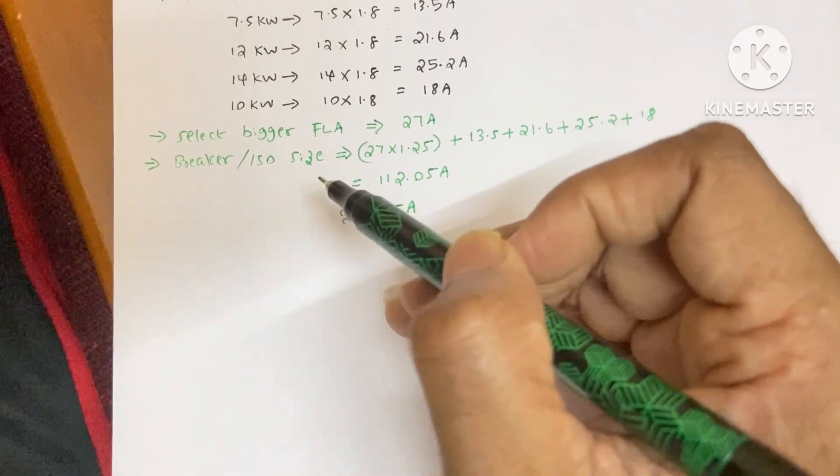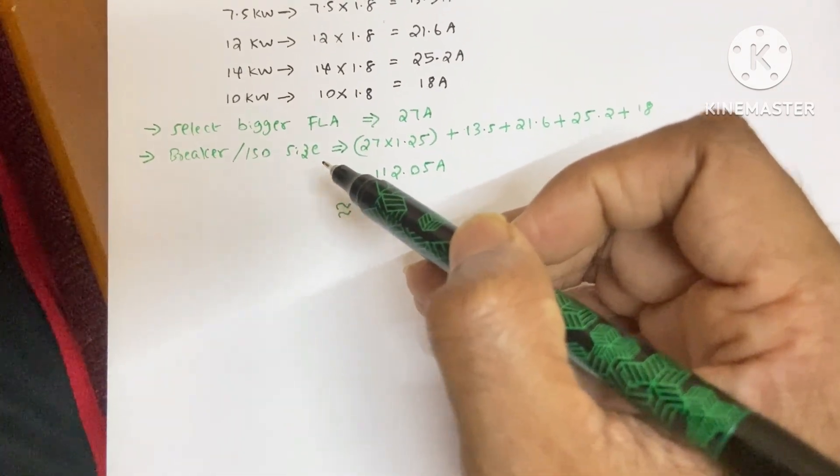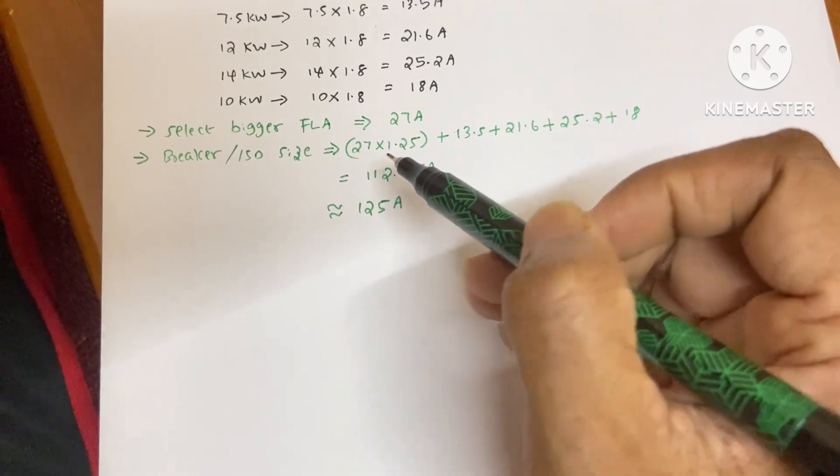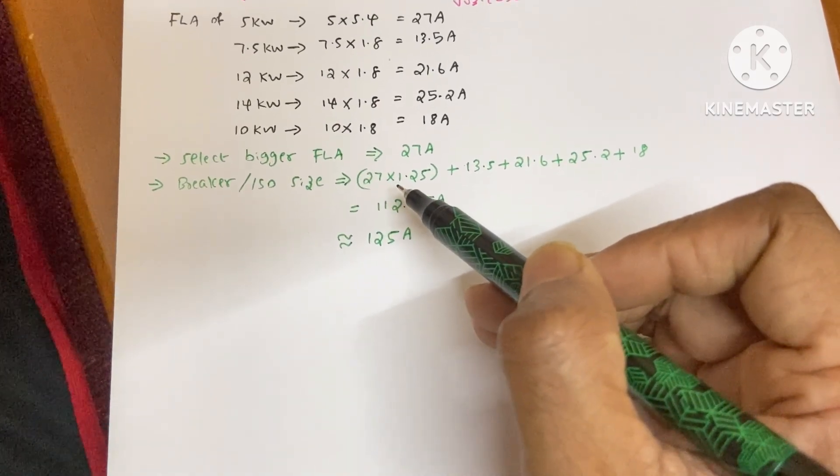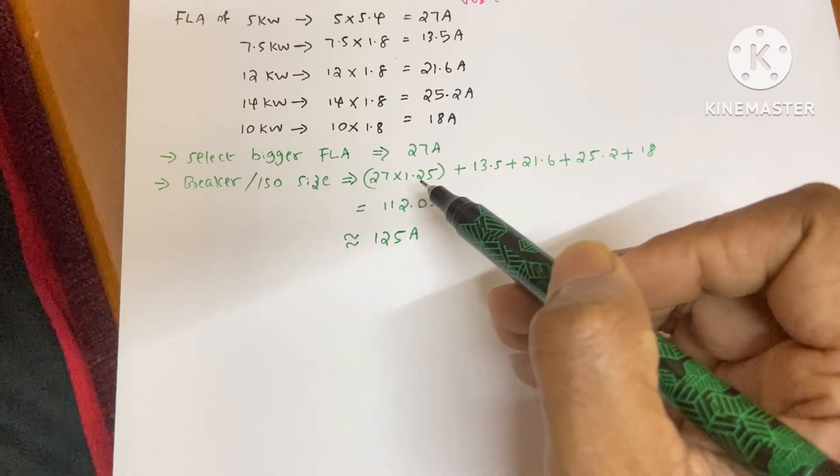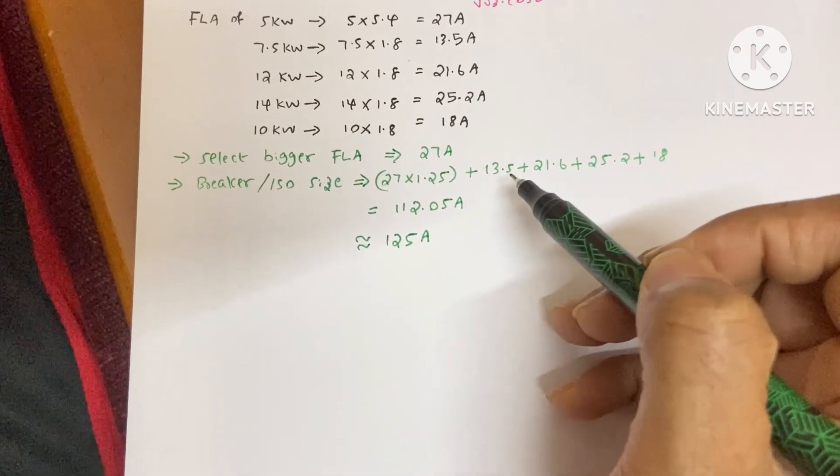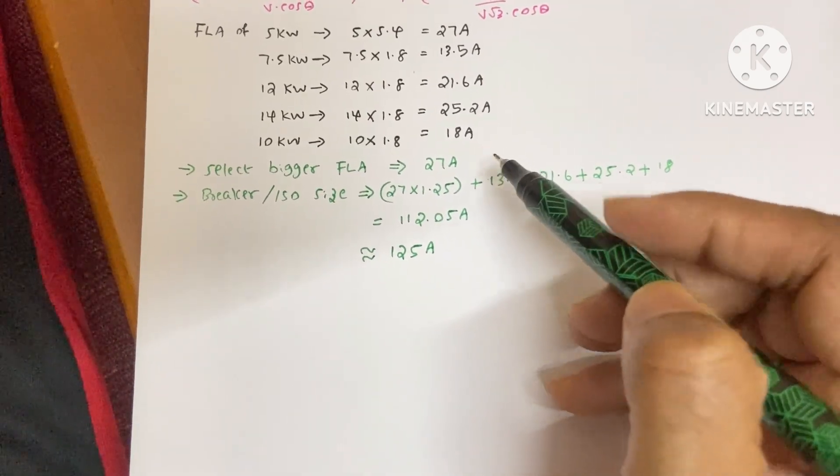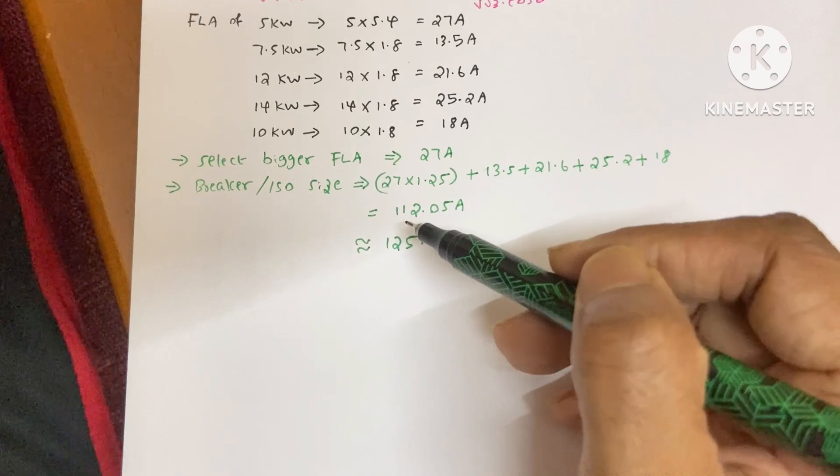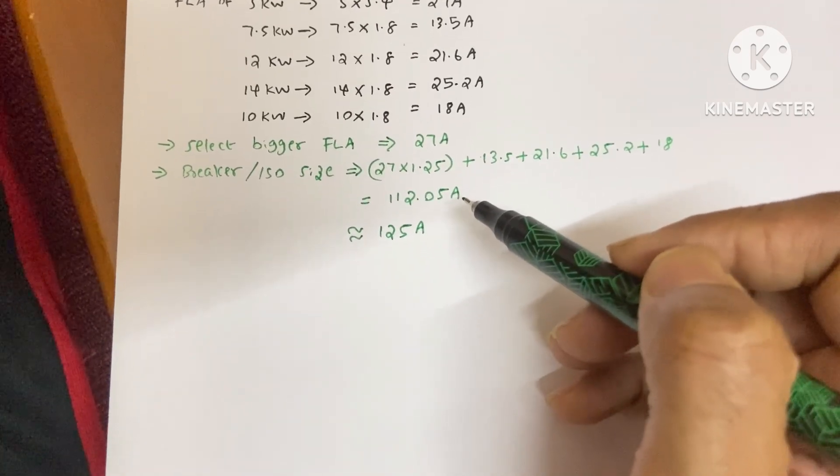Now the next step is find the breaker or isolator size. So the equation is the bigger one, that is 27 ampere into 1.25. This 1.25 is the safety factor. And then you need to sum all the other values. And now we got the value of 112.05 ampere. It is the breaker size.